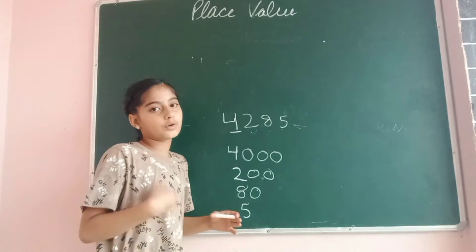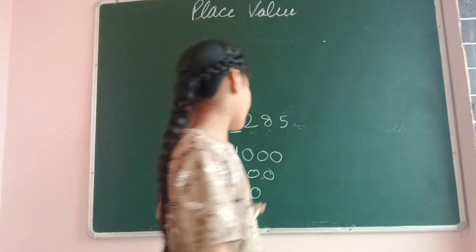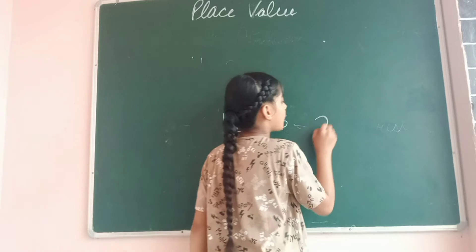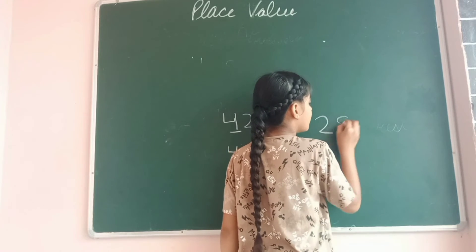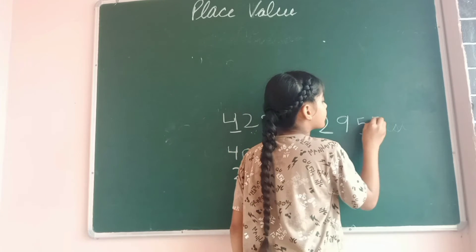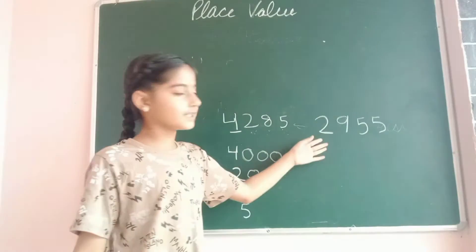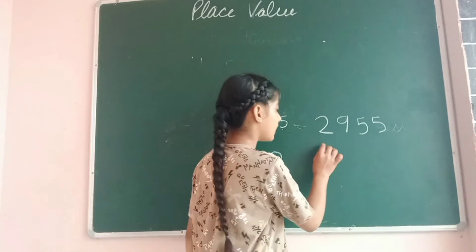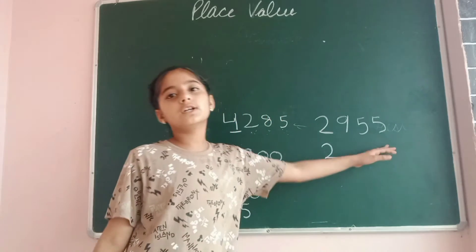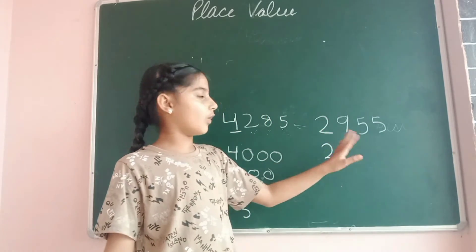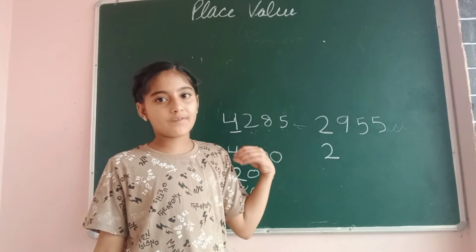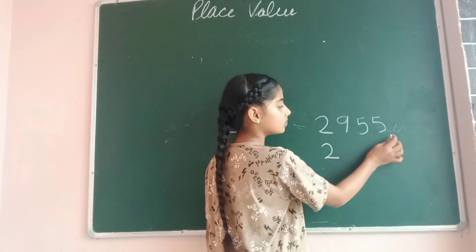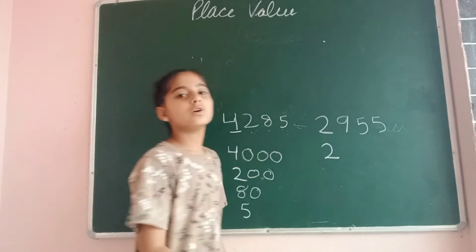So I am going to review that trick. If I have to find the place value of digit 2 in 2955, first I am going to write the digit 2, then count the digits after 2 — one, two, three — so 3 zeros. We write 2 followed by 3 zeros, giving the place value of 2 as 2000.